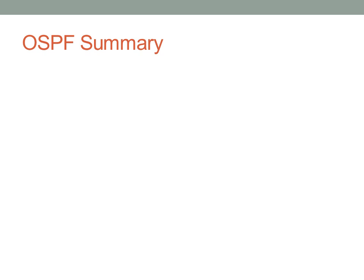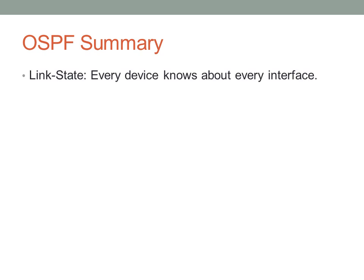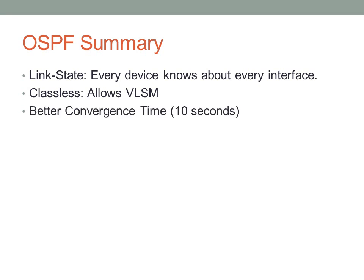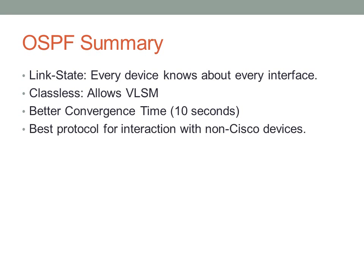To summarize OSPF: OSPF is a link state protocol, meaning every single device running OSPF on the network knows about every single interface and what network those interfaces are connected to. OSPF is classless, it allows variable length subnet masking, so we can do VLSM topologies. It has a really good convergence time of approximately 10 seconds, and is probably the best protocol for interaction with non-Cisco devices, as OSPF is the only open source one of the serious routing protocols on the CCNA. It's fairly widely implemented and while a little CPU intensive, it's fairly robust.